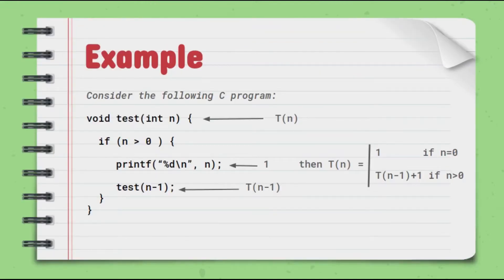Consider the following C program: void test(int n). It takes an integer parameter n. If n is greater than 0, it prints the value of n using printf, and then calls the function back with n minus 1, reducing the value each time. This function does nothing but print the value of n and call itself.